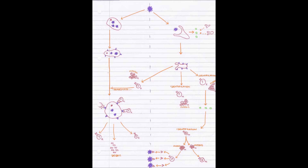In the short term, it's the T-helper cells we specifically look at. T-helper cells divide from the original T-cell and then replicate by mitosis — this process is known as clonal expansion. These T-helper cells all produce loads and loads of chemicals called interleukins.